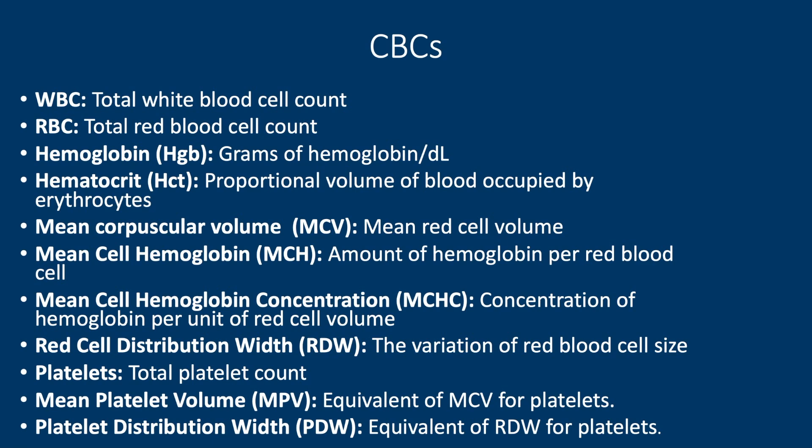Your RDW, or red cell distribution width, is basically your variation of red cell size. You and I probably have red cells that are about the same size, so your RDW is going to be in the normal range. But if you have people who have really small ones and really big ones, then you're going to have an elevated RDW.